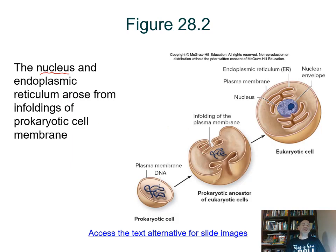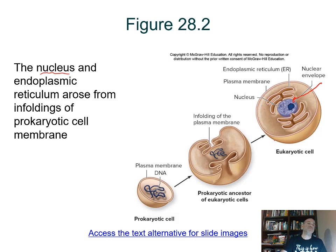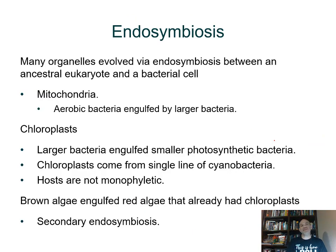One would imagine: how does a nucleus evolve if you start with cells that don't have one? If you fold inward the plasma membrane, eventually that membrane can fuse and form a compartment around your genetic material — your chromosomes. The result is a nuclear envelope, and that folding, still continuous with the nuclear envelope, provides what we define as our endomembrane system, because the membranes are all connected.